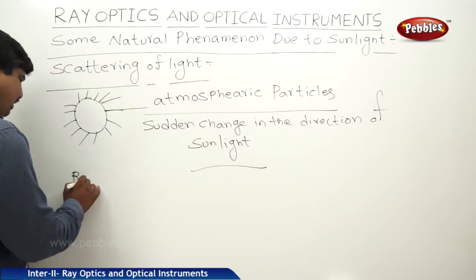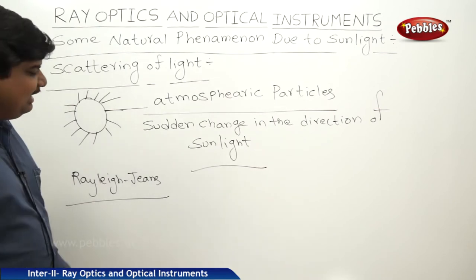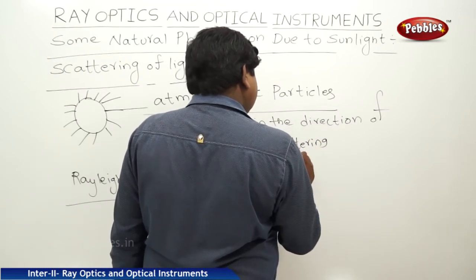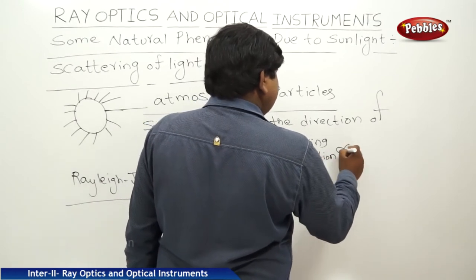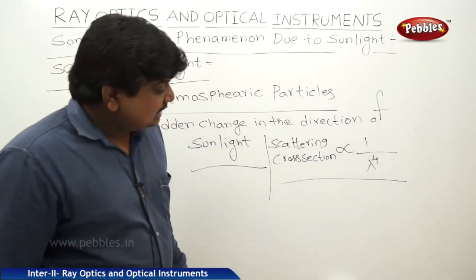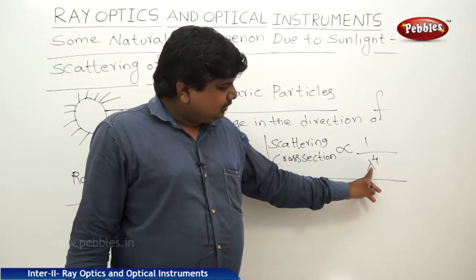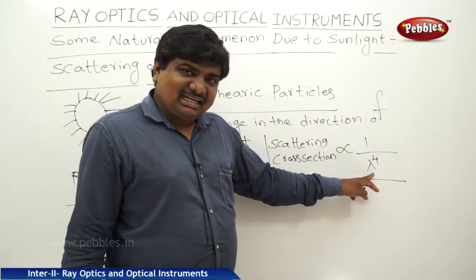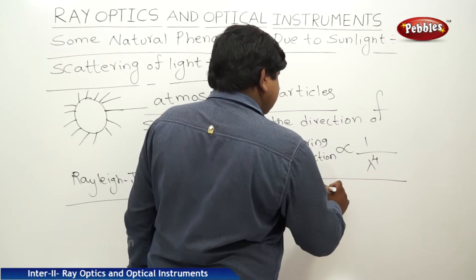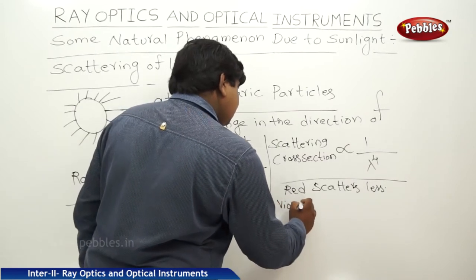According to scientists Rayleigh and Jeans, the scattering cross section is directly proportional to 1/λ⁴ — meaning it is inversely proportional to the 4th power of the wavelength of the color. This means: wavelength is more, scattering is less. That is why red color, having the highest wavelength, scatters less, while violet scatters more.